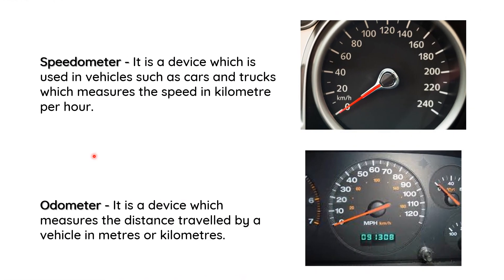You might have seen a meter fitted on top of a scooter or motorcycle, and on dashboards of cars, buses, and other vehicles. One of these meters has 'kilometer per hour' written at one corner — this is called a speedometer. It records speed directly in kilometer per hour, showing values like 0, 20, 40 as the vehicle moves. The speedometer is a device used in vehicles such as cars and trucks which measures speed in kilometer per hour.